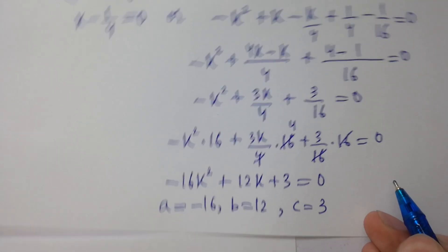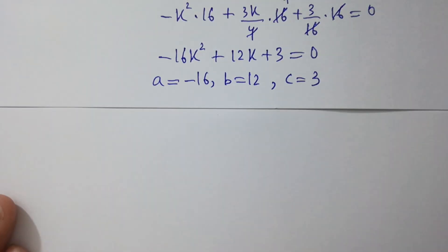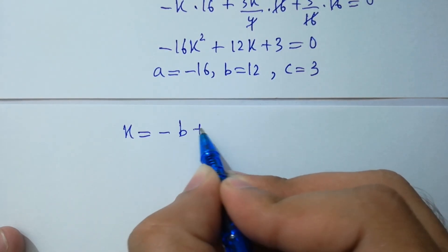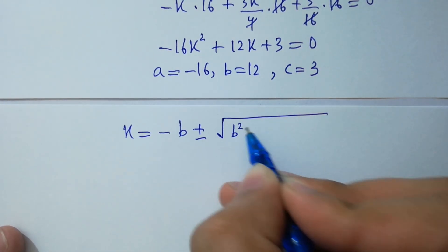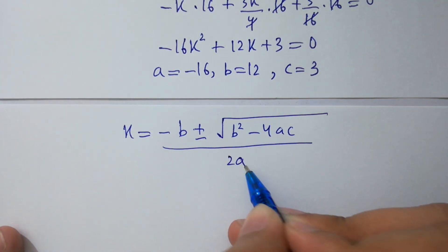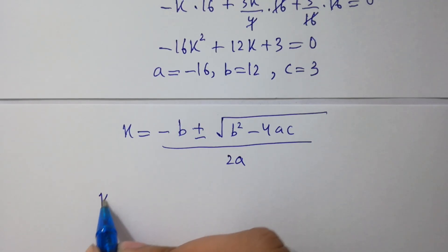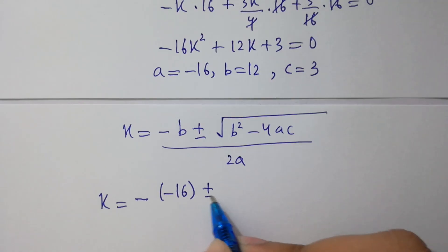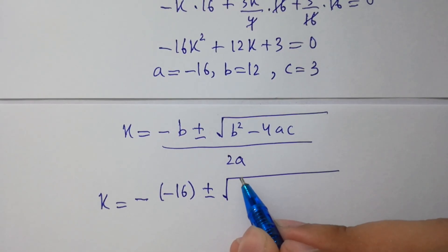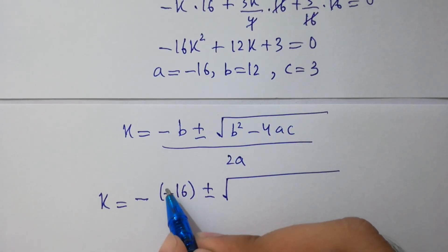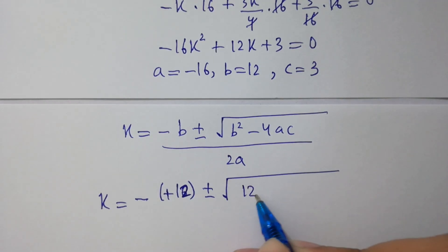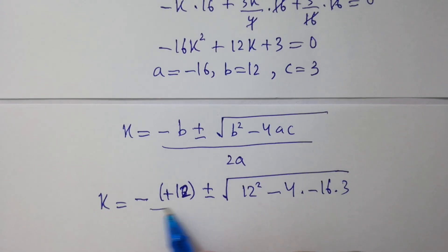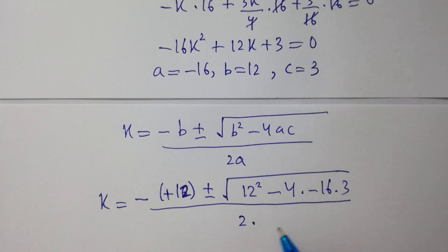Apply the quadratic formula: k equals minus b plus or minus square root of b squared minus 4ac, all over 2a. So k equals minus 12 plus or minus square root of 12 squared minus 4 times minus 16 times 3, over 2 times minus 16.